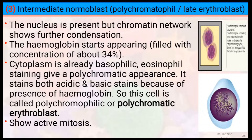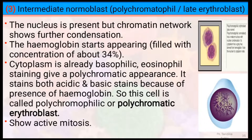Then, intermediate normoblast. The nucleus is present but the chromatin network shows further condensation. Hemoglobin starts to appear, filling about 34 percent. The cytoplasm is basophilic, but eosinophilic staining gives a polychromatic appearance, so it stains both acidic and basic stains due to the presence of hemoglobin. This cell is therefore called polychromatic erythroblast. It also shows active mitosis.